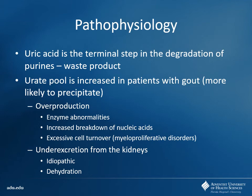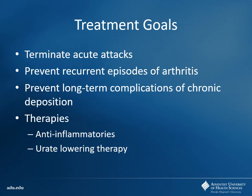The issue is either overproduction or under-excretion of uric acid, and we can target that with drug therapy. With our treatment goals: if they're having an acute attack — if it's the first presentation — fix that first. Then we want to prevent recurrent arthritis and prevent long-term issues like chronic deposition of uric acid crystals. Main approach: anti-inflammatories for acute attacks, then urate-lowering therapy for prevention.